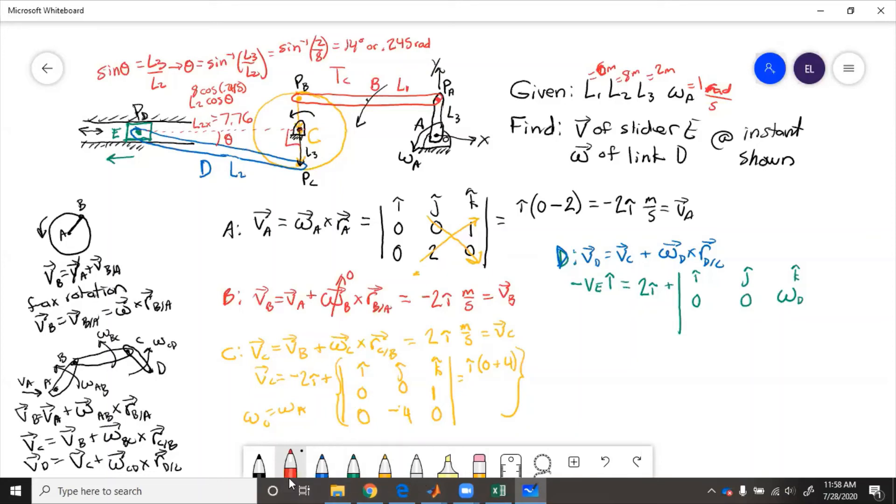So down here we've got the x direction, but it's negative because it's to the left, 7.76. The j direction is L3, but from C to D you go up. So that's going to be a positive and then a 0 in the z direction. So negative VE i hat equals 2i hat plus from this cross product we've got i hat times that, so 0 minus 2 omega D, and then minus j hat times 0 minus negative 7.76.